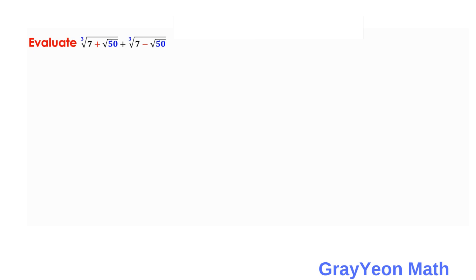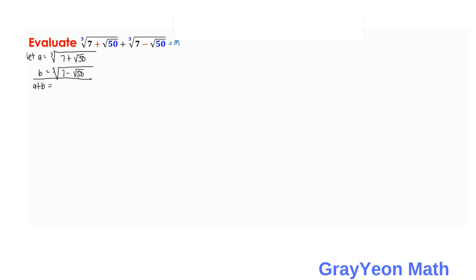First, we let the full expression be equal to m. Next, we make substitutions: we let a equal to the cube root of 7 plus square root of 50, and b equal to the cube root of 7 minus square root of 50. So we have a plus b equal to m.